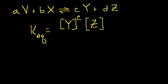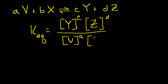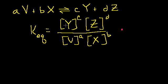D is just the number of moles we need of Z for every C moles of Y, B moles of X, and A moles of V. So Z to the D power, divided by the concentration of V to the A power and X to the B power. The question is: why does it look this way? I've come up with a much simpler and more intuitive reason, which will also help explain things we'll learn about equilibrium constants in future videos.